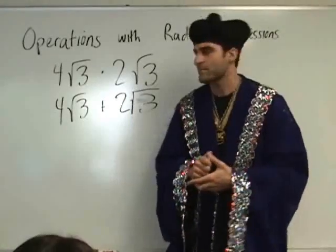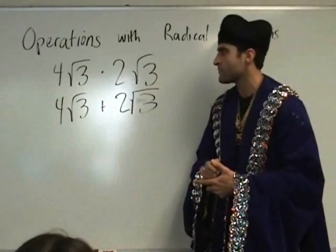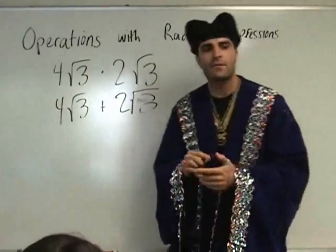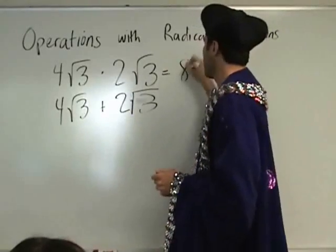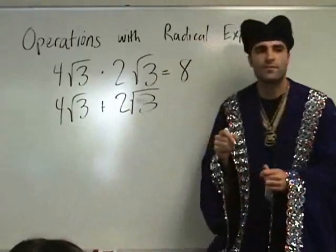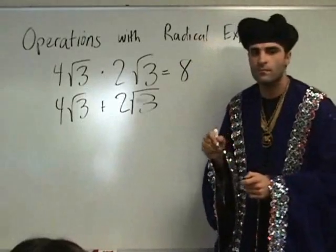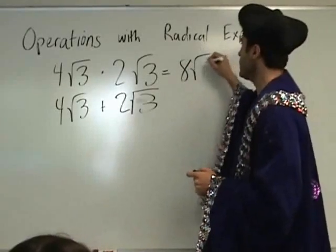For the first one, I think you do four times two first. Okay, four times two — what's that going to be? Eight. And then what's under the square root: three times three, which is nine. So you do square root of nine. Square root of nine.